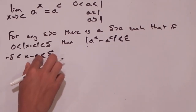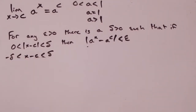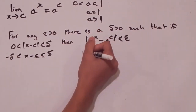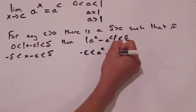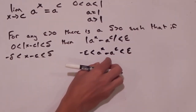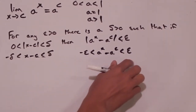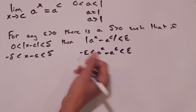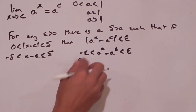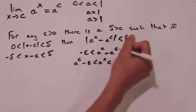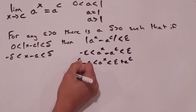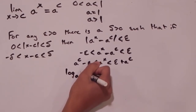We're going to do some algebra with our epsilon inequality. We rewrite the absolute value condition as: negative epsilon is less than a to the x minus a to the c, which is less than epsilon. Adding a to the c throughout gives us: a to the c minus epsilon is less than a to the x, which is less than epsilon plus a to the c. Then we take the log base a of both sides.